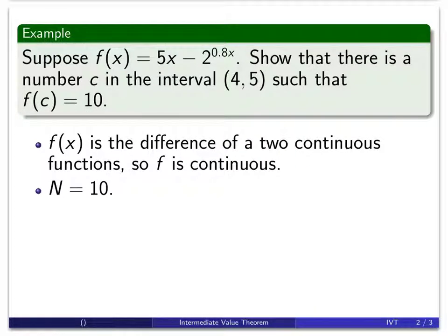Now we want to know, is there a number for which the function value is equal to 10? So we're going to let N be equal to 10. If we go back to the statement of the theorem, 10 is the value N. Well, now we calculate the function at each of the endpoints, at 4 and at 5.